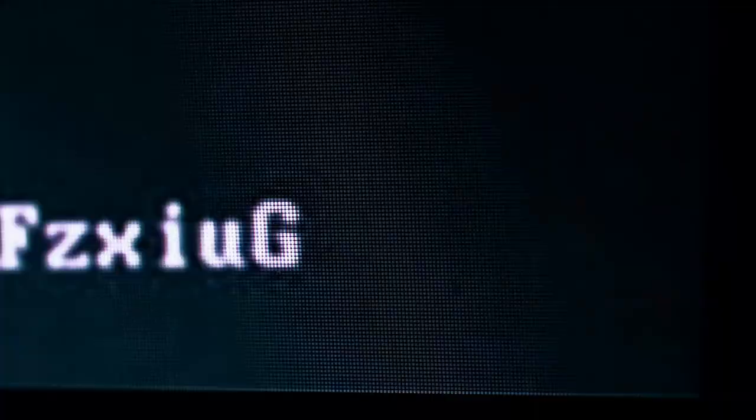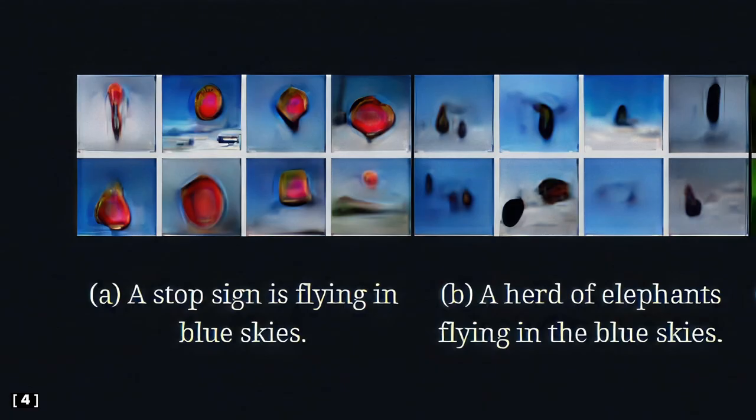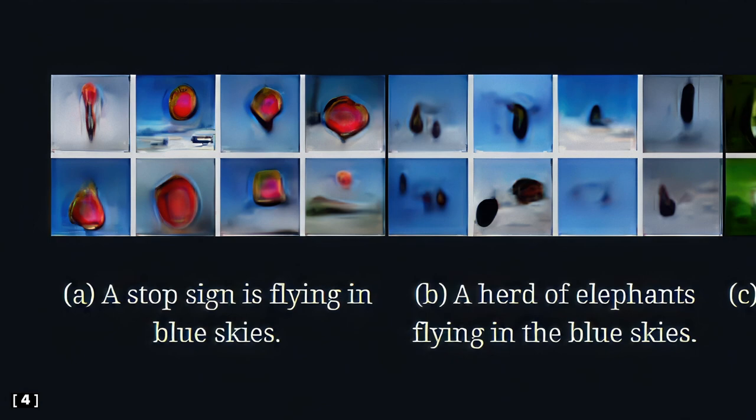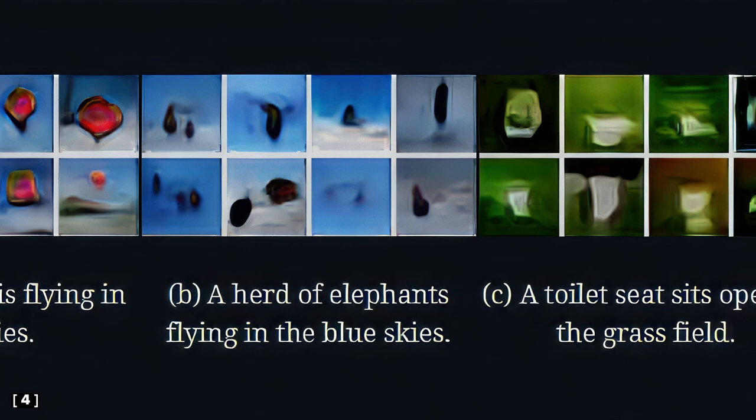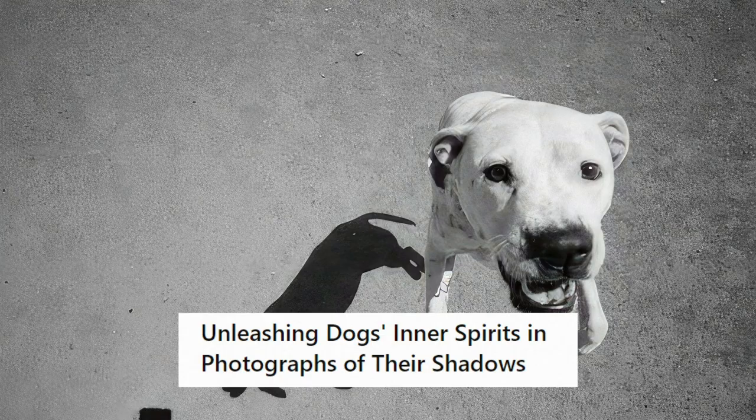One of the earliest ideas for generating images from a written description was to use captions. If deep learning models are so good at describing what they see on an image, maybe we could reverse the process too. Most images on the internet are accompanied by textual descriptions, so it only makes sense to train AI not only with images, but also with their corresponding captions.